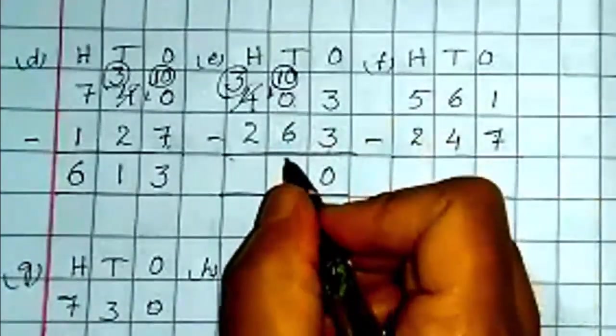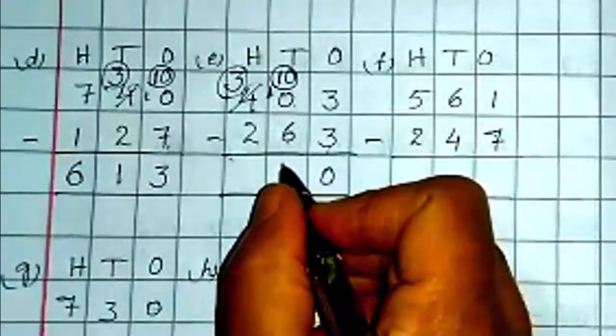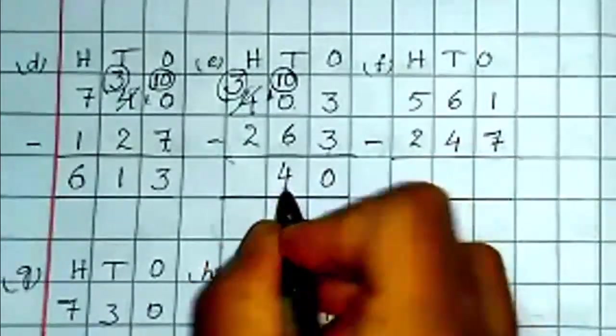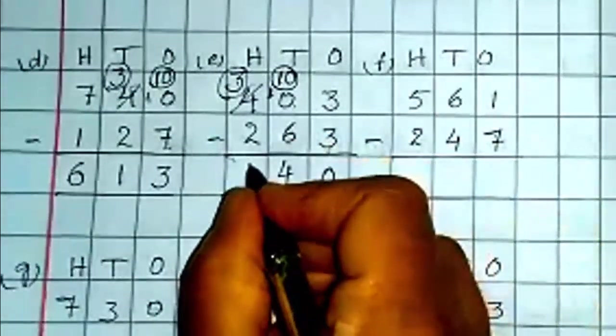Now after 6 till 10. 7, 8, 9, 10. 4 are left here. 3 minus 2 is 1.